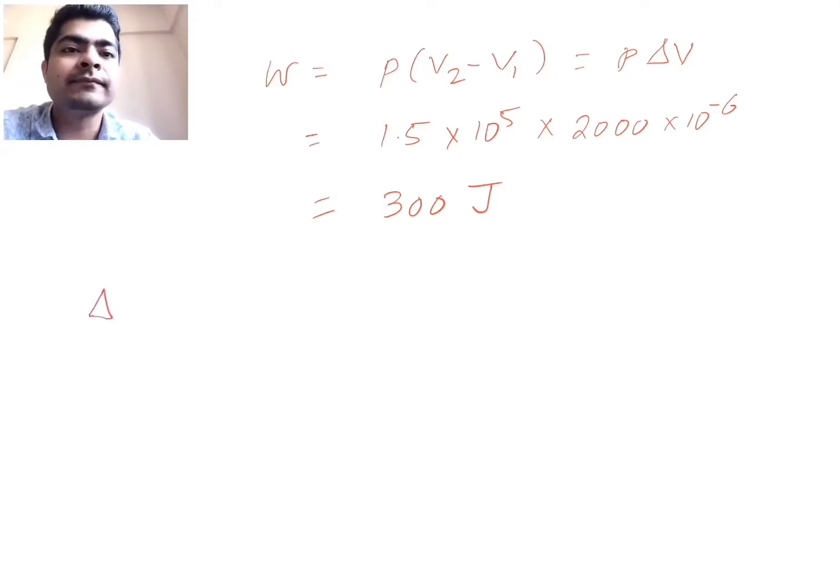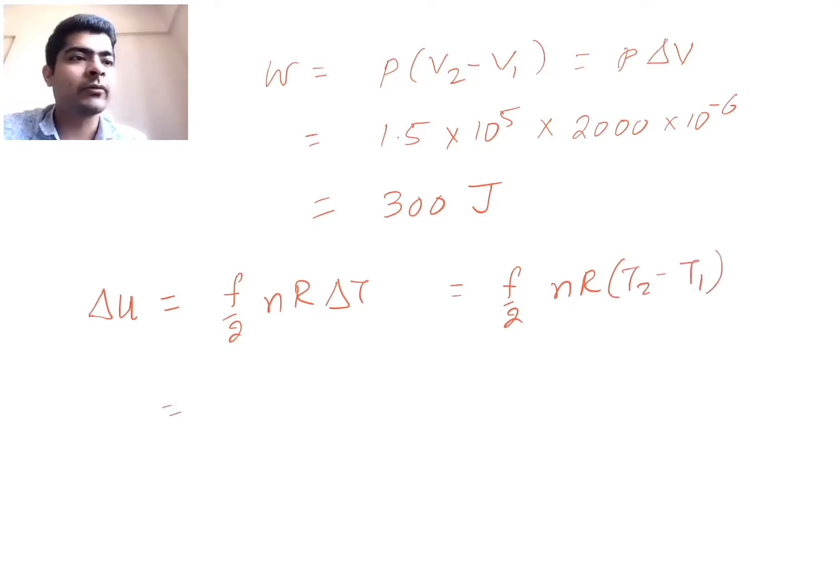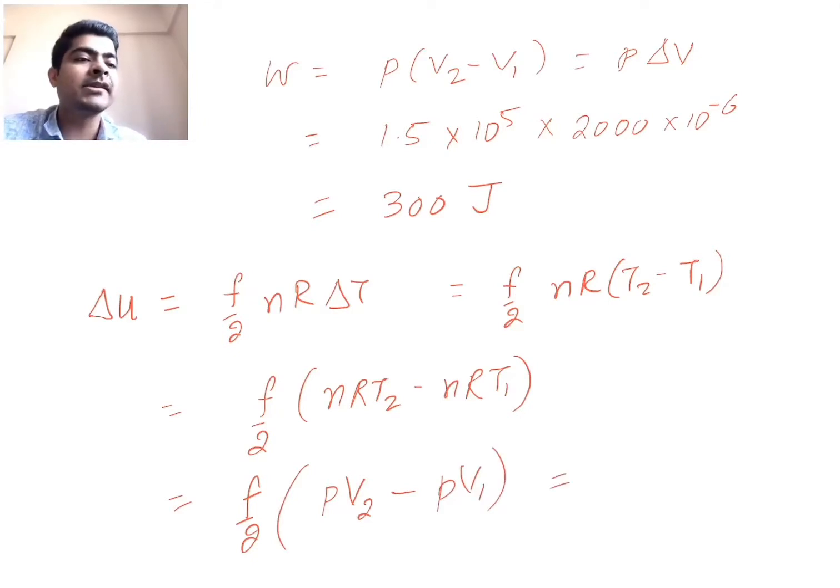Now what about the change in internal energy? So delta U will be delta U will be f by 2 n R delta T, or I could write this down as f by 2 n R T2 minus T1. So this is equal to f by 2, n R T2 minus n R T1. Now n R T2 is how much? P V2. So I could rewrite this down as f by 2, n R T2 is P V2 minus n R T1 is P V1, so this is basically equal to f by 2 P delta V.